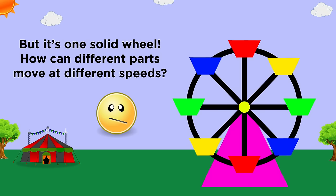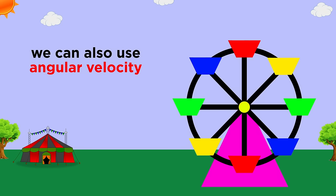This seems counterintuitive, since the wheel is one object, but that's why we can also discuss angular velocity, which we will learn about later.